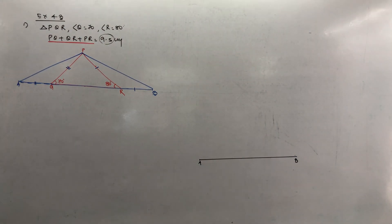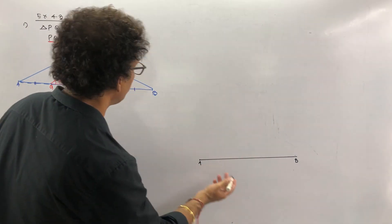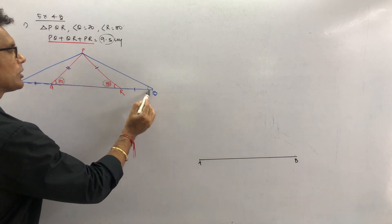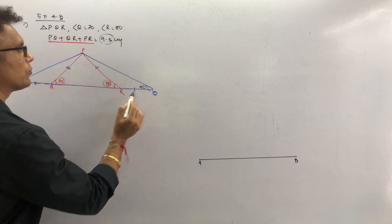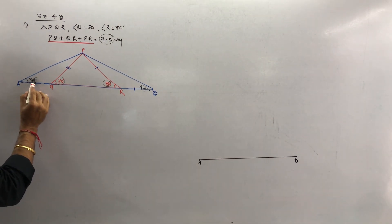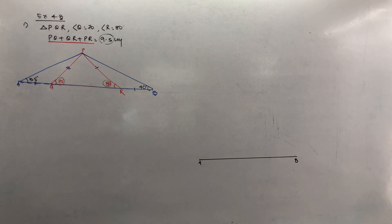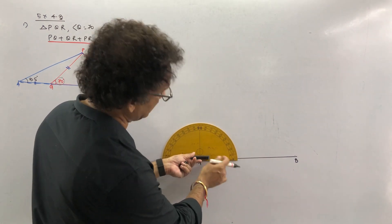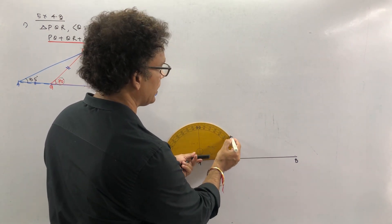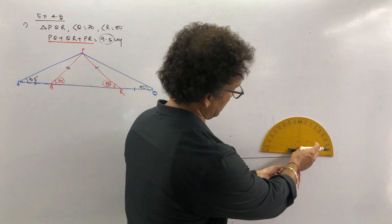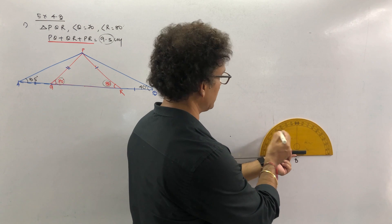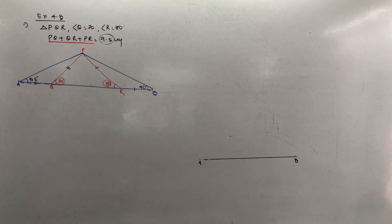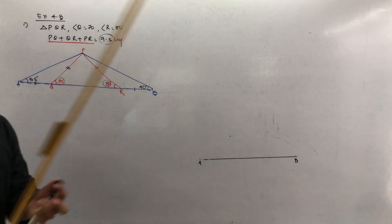Draw a line segment AB which is equal to 9.5 cm. Now what we will do: the given angles will be drawn at each end. Angle R is 80°, so we make it half — that is 40°. And angle Q is 70°, so we make it half — that is 35°. So we will draw angles of 35° and 40° at the two ends of AB.